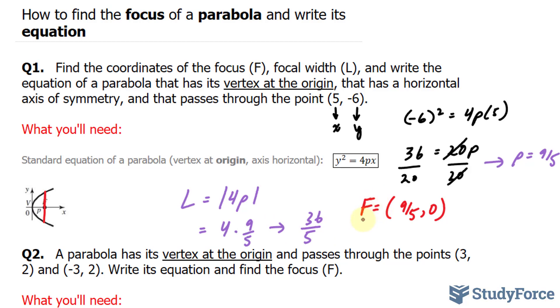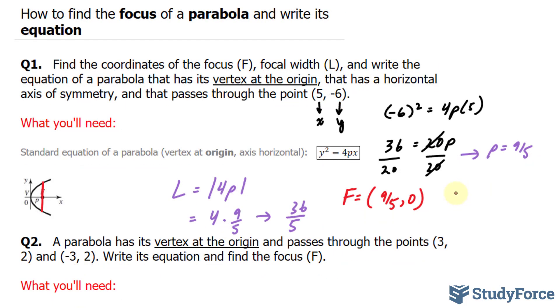Now, all I have to do is rewrite my equation with p. So, I have y² = 4 × (9/5), and that's equal to (36/5)x.